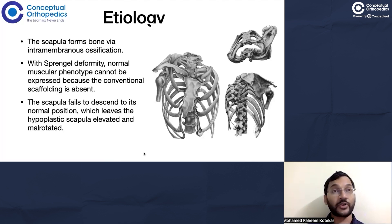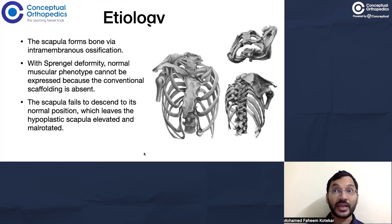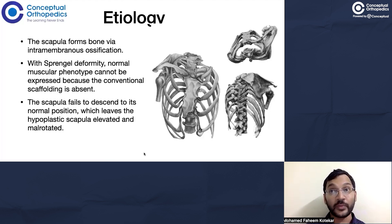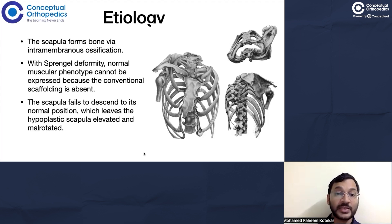When the framework, that is the scapula, is itself hypoplastic, the musculature around it will also be hypoplastic. A comparable example from pediatric orthopaedics is the development of the femoral head and acetabulum in DDH: if the femoral head is within the acetabulum, both grow together; but if the hip is dislocated, neither the acetabular cup nor the femoral head develops properly. Similarly here, it is not just the scapula but also the surrounding musculature which will not develop.